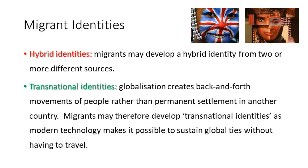This focus on migration has led some sociologists to consider the impact migration has on migrants' identities, and two different migrant identities are identified. First, hybrid identities — where migrants develop a hybrid or mixed identity from two or more different sources. For example, an individual born in Finland who grows up feeling very Finnish but later goes to live and work in Germany may, over a period of time, build a hybrid identity, feeling partially Finnish and partially German.